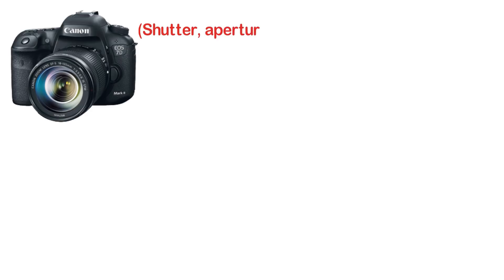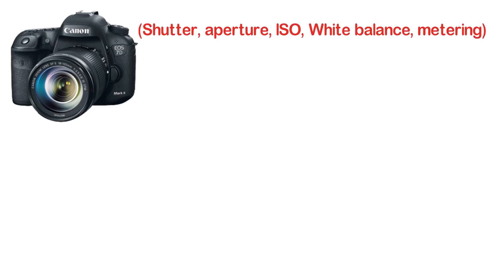The camera automatically handles the settings of exposure, shutter, aperture, ISO, and white balance. In the middle of the mirror, the sensor has a memory card transfer. And all cameras work in this way.